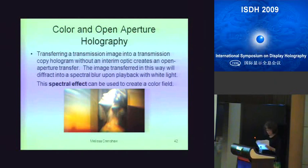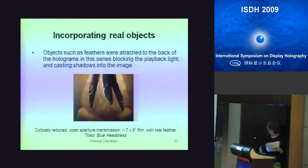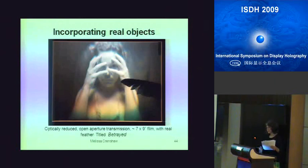Now incorporating real objects. Objects such as feathers were attached to the back of the holograms in this series, blocking the playback light and casting shadows into the image. The feathers blocking the playback light also interrupted the reconstruction of the image where they blocked the light, adding an interesting void zone in the holograms. In some ways this addition of the object into the final hologram refers back full circle to my early explorations of the media, where only the object was of significance. This example is an optically reduced piece, about seven by five inches, with the feather in it.